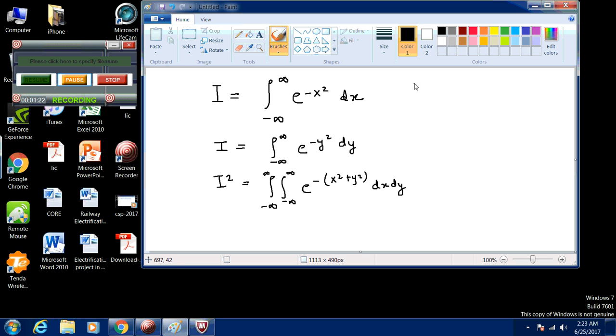We take x equals rho cos phi, y equals rho sine phi. We are moving from Cartesian to cylindrical coordinates. Then your equation becomes I squared equal to double integral e raised to power minus rho squared d rho d phi.